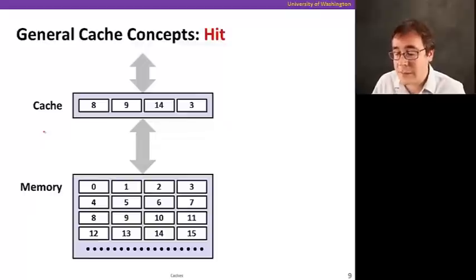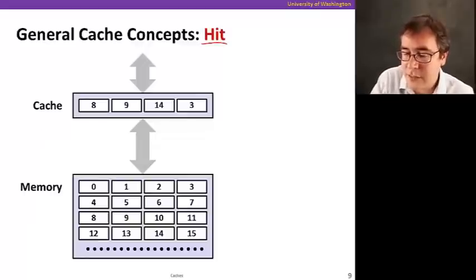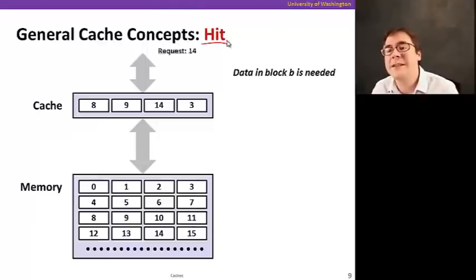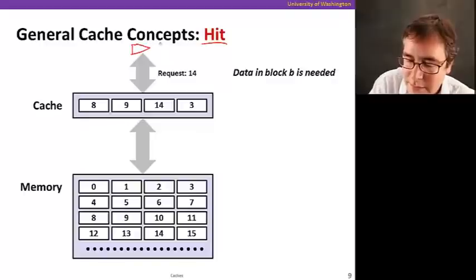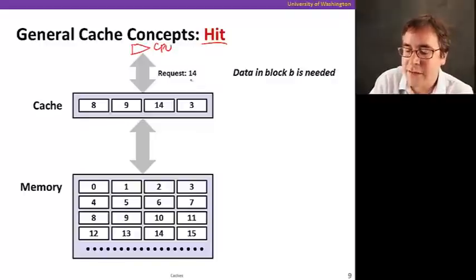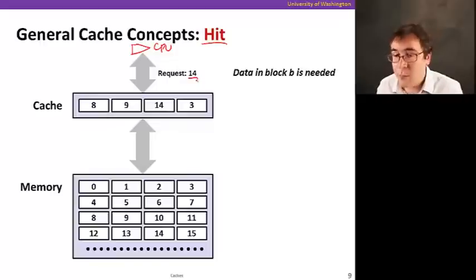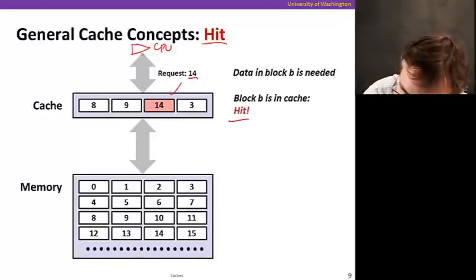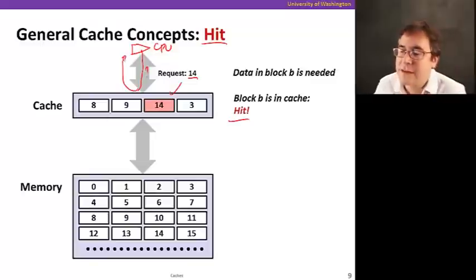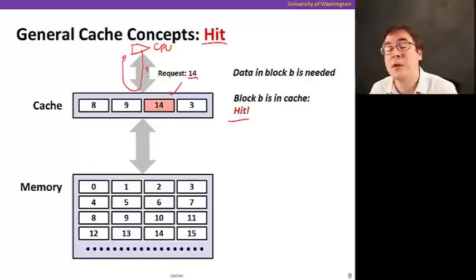So the first concept is what we call a hit. A hit means whenever you want to access the data - let's say that the processor that's right here, that's where the CPU is, asks for 14. Well, if it happens to be in the cache, we call it a hit. So that means the CPU asks for the data and then the cache can provide the data back. That's fast, right? That's a good thing. We took advantage of the fact that caches are fast and provide the data from the cache.